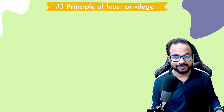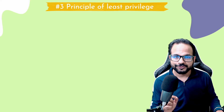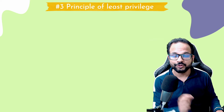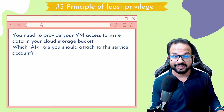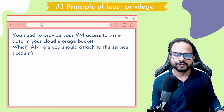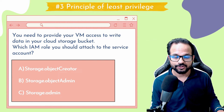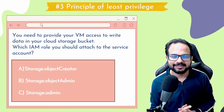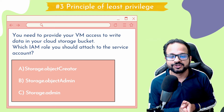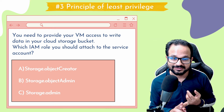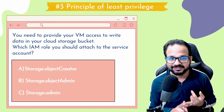Tip number three is the principle of least privilege access. This states that you should assign only the required permissions and roles needed to perform certain duties. For example, you need to provide your VM access to write data in your Cloud Storage bucket — which IAM role should you attach to the service account? The options are: Storage Object Creator, Storage Object Admin, and Storage Admin. Your requirement is to write data, so you shouldn't have Object Admin or Storage Admin access. Only the Object Creator access should be sufficient.